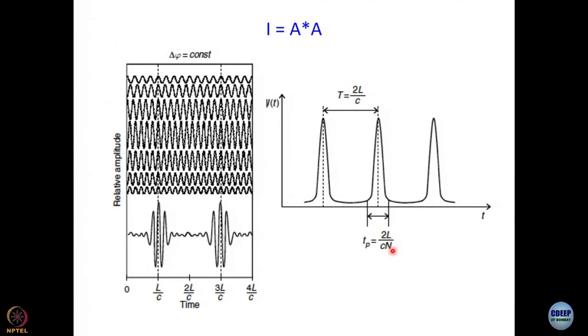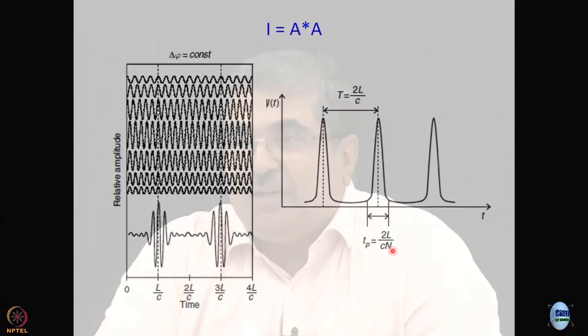What is the meaning of n? Capital N. Number of longitudinal modes that are locked. This is what brings us to mode locking. If we can lock a large number of modes, then we get short pulses. Because n comes in the denominator. If n is large, then TP the pulse duration is going to be small. If n is small, then pulse duration is going to be large.